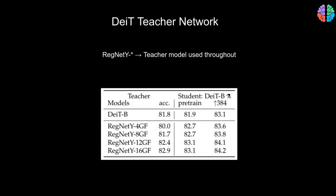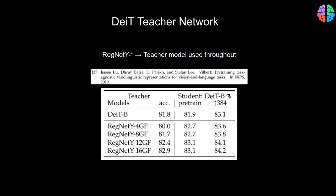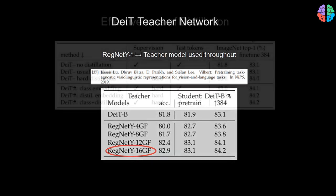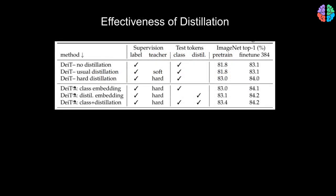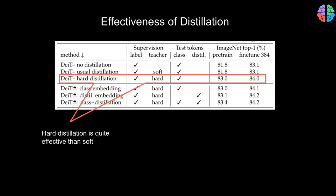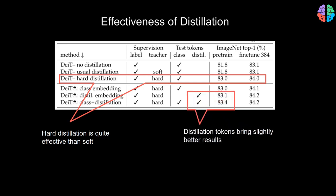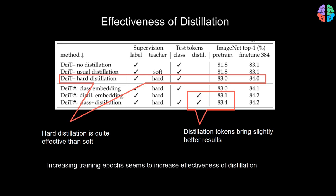The teacher network used is a state-of-the-art network proposed in a NeurIPS 2020 paper — specifically the biggest 16GF model, which achieves the highest accuracy of 82.9% on ImageNet. The better the teacher network, the better the trained transformer will be. From the results, hard distillation is quite effective compared to soft distillation, reaching an accuracy of 83% that is not possible otherwise. The distillation tokens also bring better accuracy when used alongside class tokens rather than just using class tokens as in Vision Transformer. Additionally, increasing training epochs seems to be more effective for transformers.